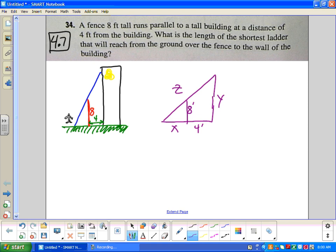And I'm going to call the ladder z. So we want to optimize z. It's nothing to do with time. It's a non-related rate. We want to minimize the distance of z.